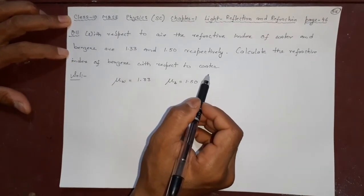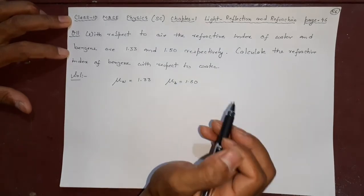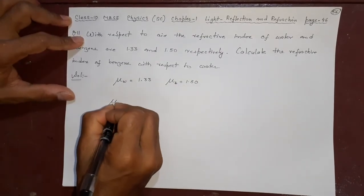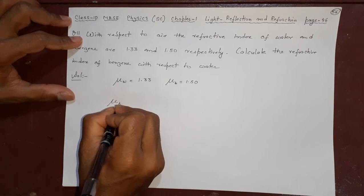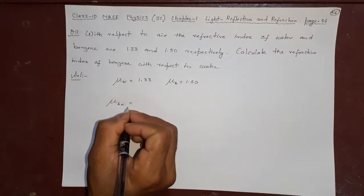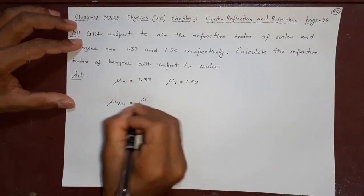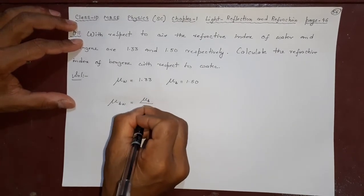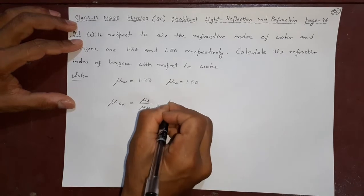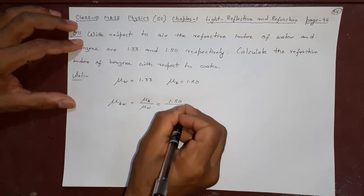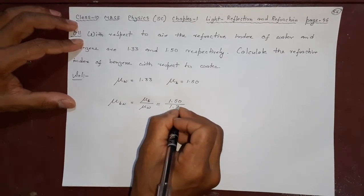Whichever is asked first, that will be in the numerator. The index of benzene with respect to water, μbw, means on top you write μb by μw. So μb is 1.50 and μw is 1.33.